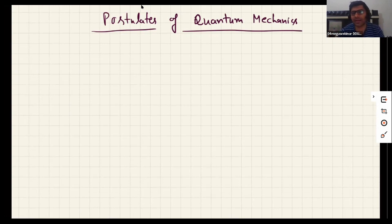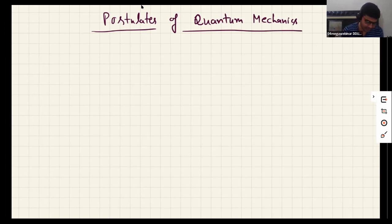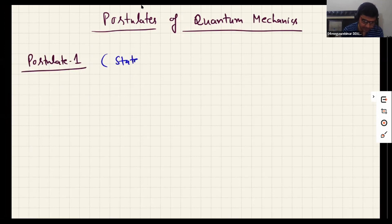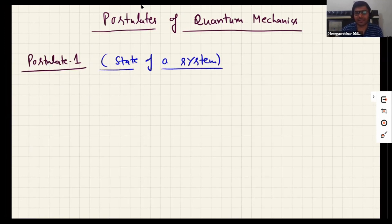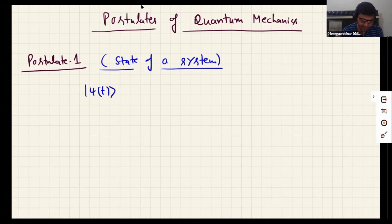There are basically five basic postulates of quantum mechanics. The first postulate is regarding the physical state of a quantum mechanical system. Postulate one says that at any instant of time T, the physical state of a system is described by a state vector |ψ(t)⟩, which is an element of a Hilbert space.